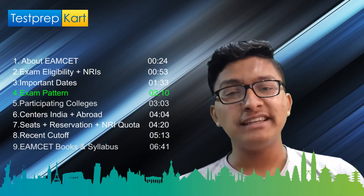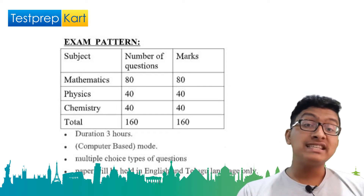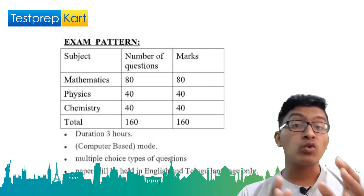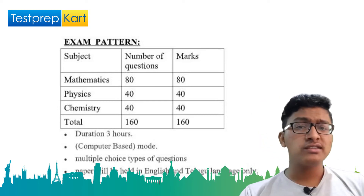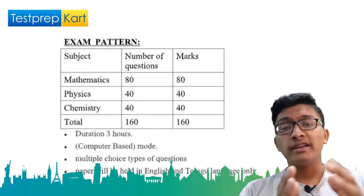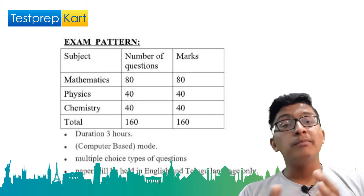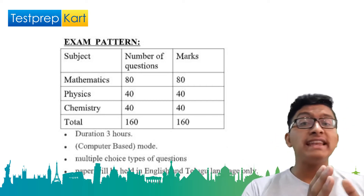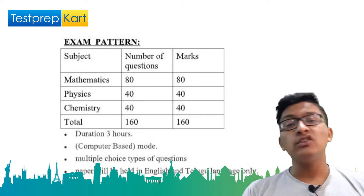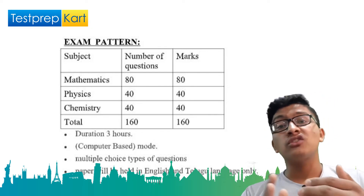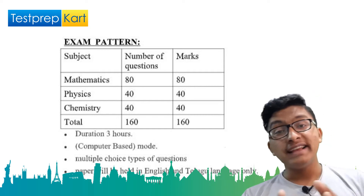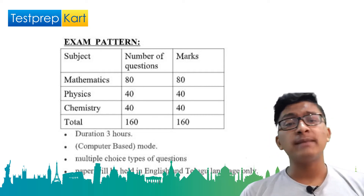There are a total of 160 questions in the EAMCET examination. The first section is Physics with 40 questions, the second is Chemistry with 40 questions, and the third is Mathematics for engineering stream students or Biology for medical stream students, consisting of 80 questions. Each question carries one mark. There is no negative marking, so you can attempt all questions.